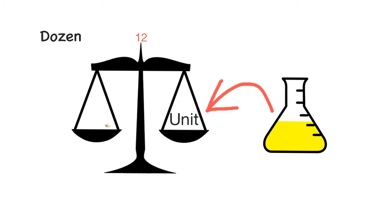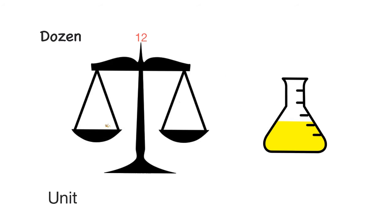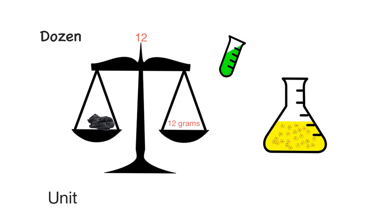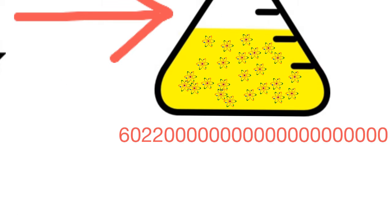To get that unit, scientists did something really smart. They took 12 grams of carbon and experimentally determined the number of atoms in it. They found that 12 grams of carbon has 6.022×10²³ carbon atoms.